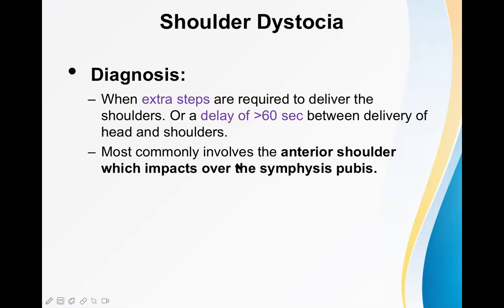Most commonly shoulder dystocia involves the anterior shoulder which impacts over the pubic symphysis. To revise the mechanism of delivery: after the head comes out, the anterior shoulder is delivered first — it is present just behind the pubic symphysis, so we pull it to deliver the anterior shoulder. Then we extend the head so the posterior shoulder is delivered, and after that the trunk follows, which is quite easy.